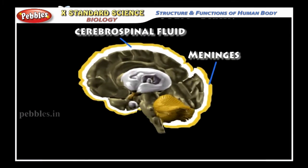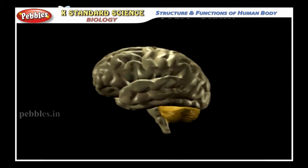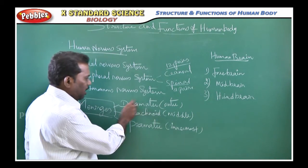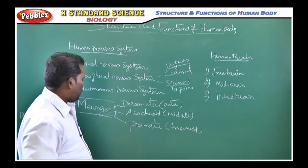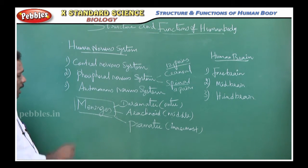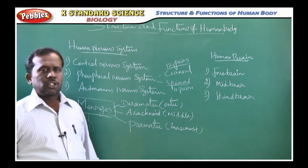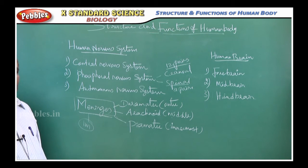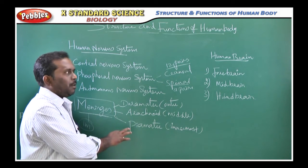The meninges — what is meningitis? That means the three membranes that cover the brain. The outer layer is called the duramatter, the middle part is the arachnoid membrane, and the innermost is the pia mater. This is also an expected question in board examinations: name the outer covering membrane of the brain — meninges — and name the three membranes: duramatter, arachnoid membrane, and pia mater.